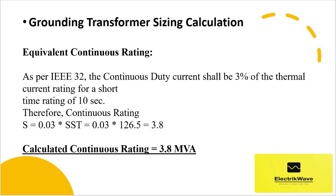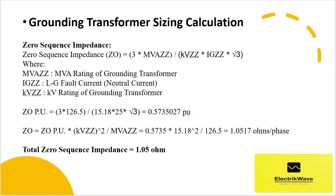Now let's calculate the zero sequence impedance. Zero sequence impedance Z0 = 3 × (MVA_ZZ / kV_ZZ) × (1 / Ig_ZZ) × (1/3), where MVA_ZZ is the MVA rating of the grounding transformer, Ig_ZZ is the line-to-ground fault neutral current, and kV_ZZ is the kV rating of the grounding transformer.